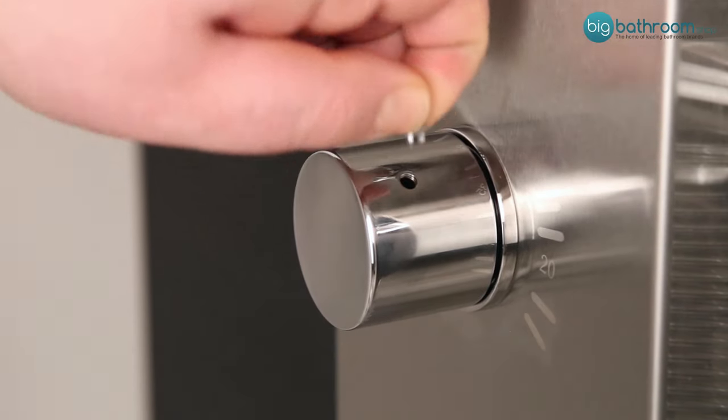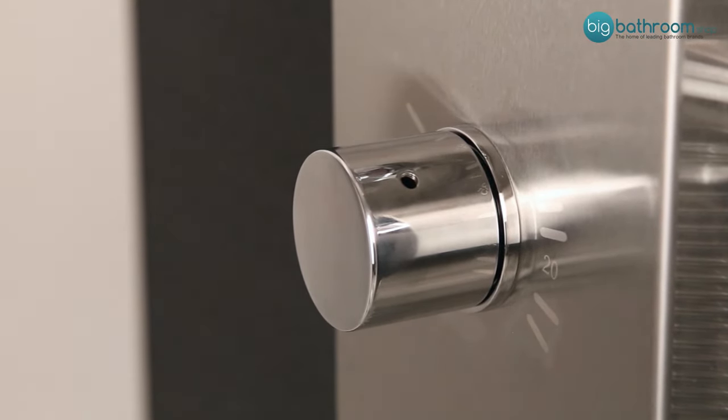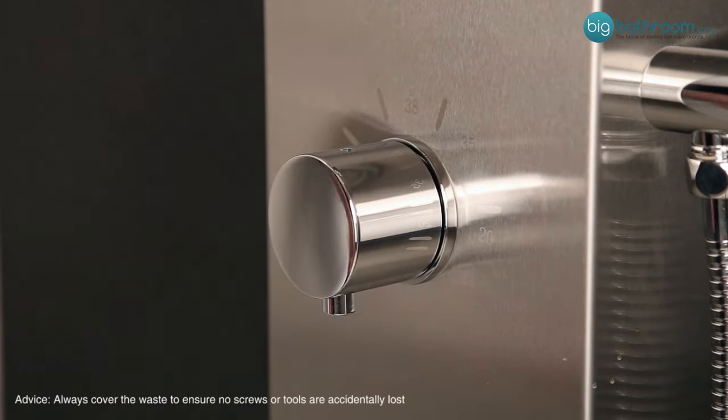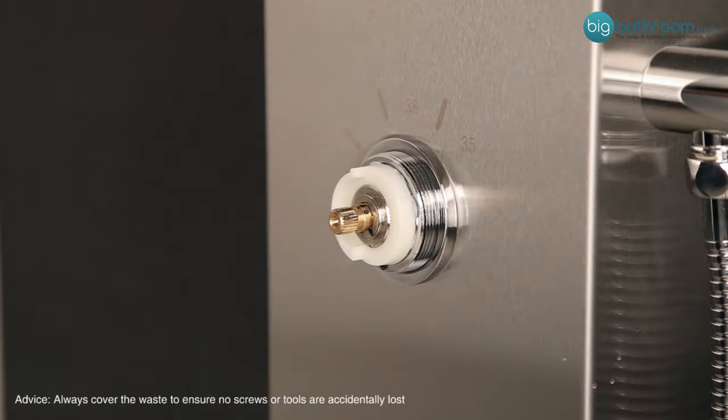Remove the plastic cap from the bottom of the temperature control handle to reveal a grub screw. Use the allen key provided with your shower to remove the grub screw and then remove the control handle.